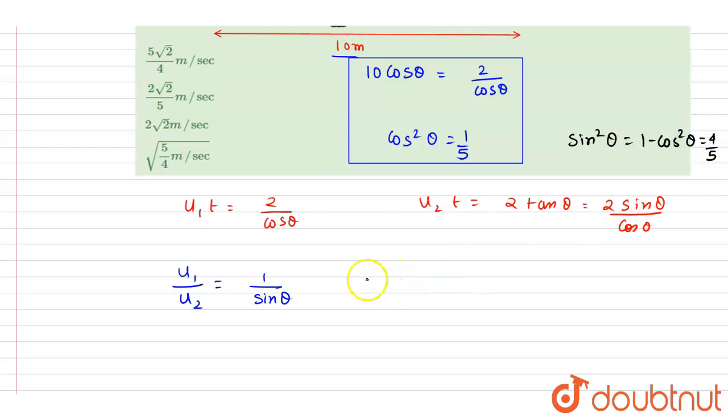1 minus 1 by 5 will be 4 by 5. So just put it here - 1 by sin theta will be the inverse of this, so it is square root 5 by 2.